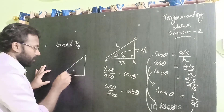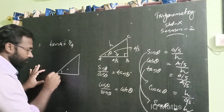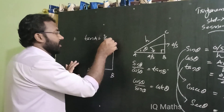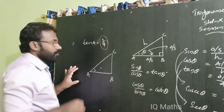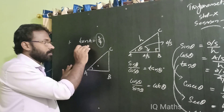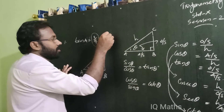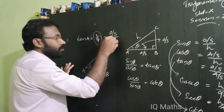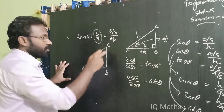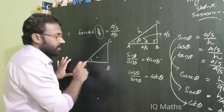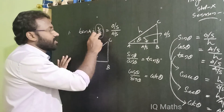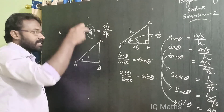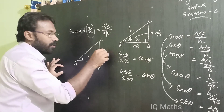We will consider a right-angle triangle with acute angle A. Here tan A is equal to 3 by 4. We know tan A is equal to the side opposite to angle A divided by the side adjacent to angle A. Here the opposite side is BC and the adjacent side is AB, and the ratio is 3 by 4.